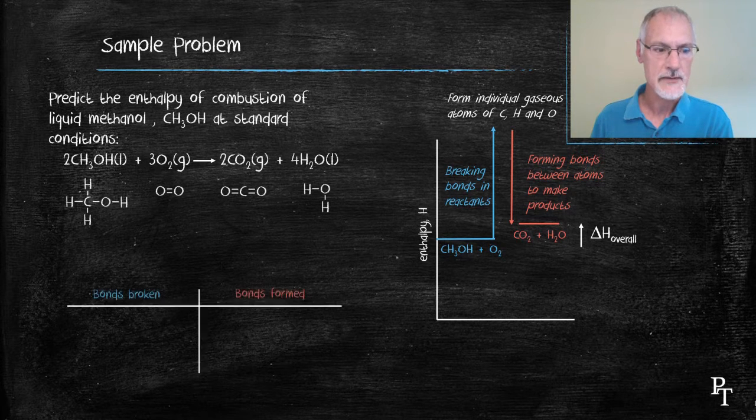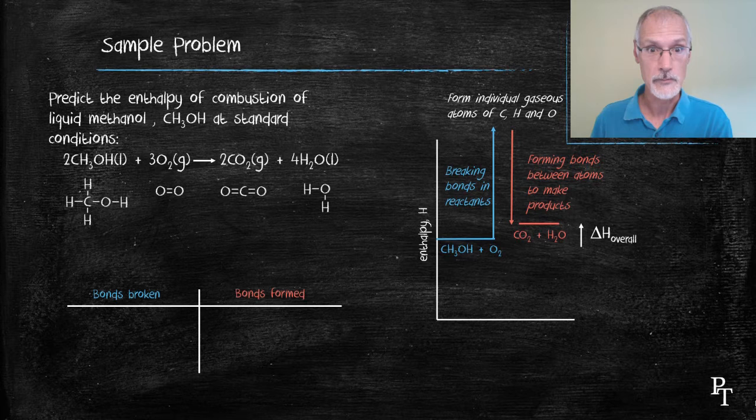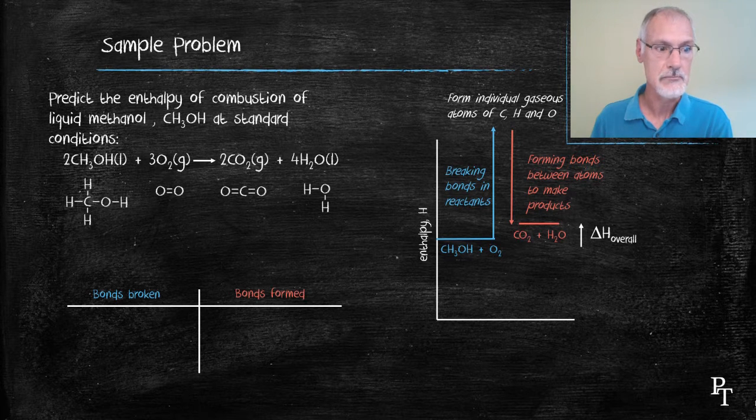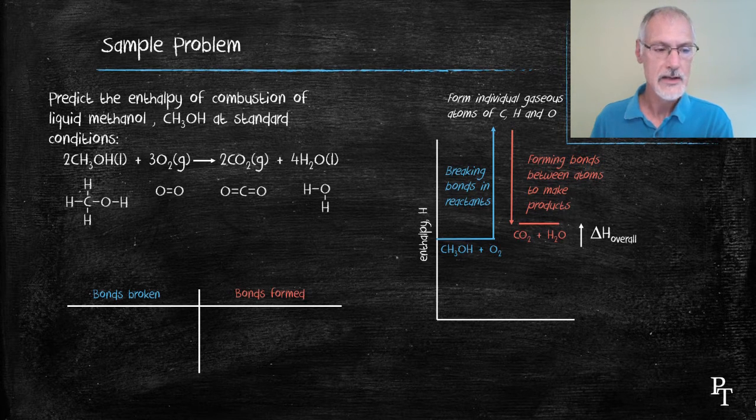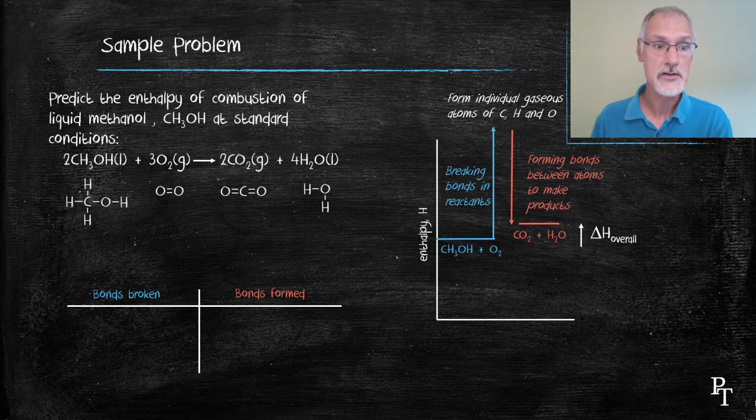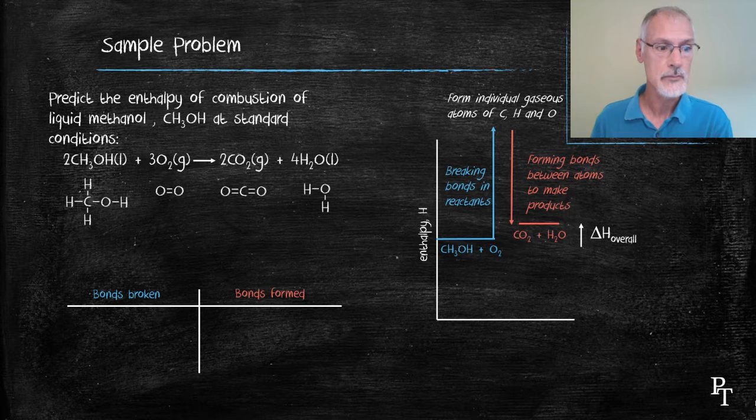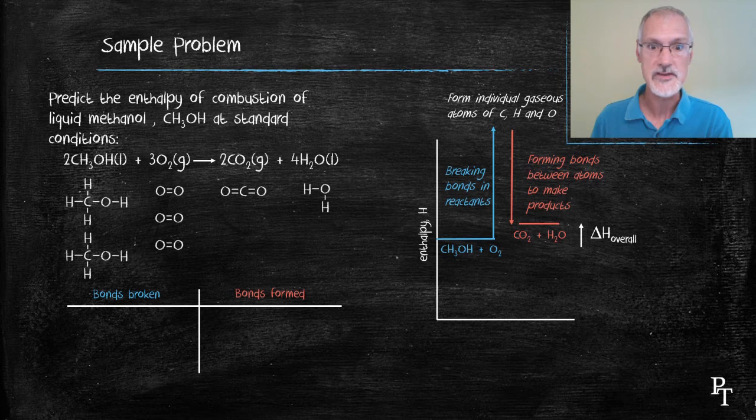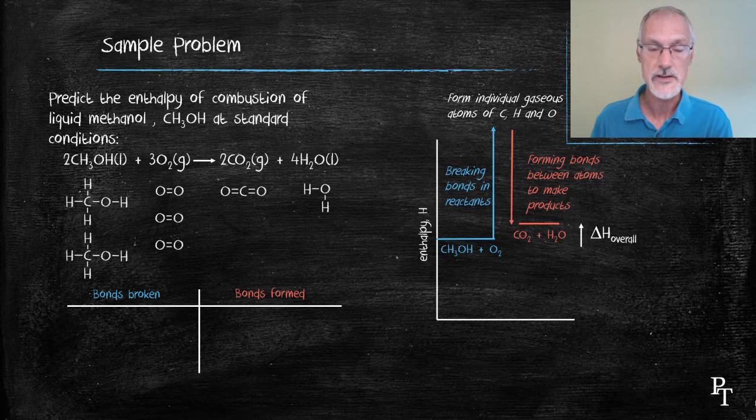Now, let's take a look at the bonds we have to break and the bonds we form. The bonds we break deal with our reactants, methanol and oxygen. Now, it's important to note here that I'm not just breaking one methanol. According to the balanced chemical equation, I'm breaking two methanol and three oxygen molecules. So when I'm counting up bonds, I must take into account how many there are of each species.